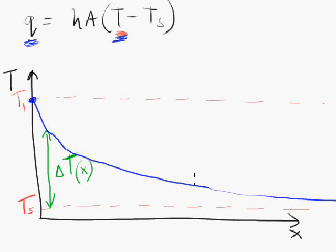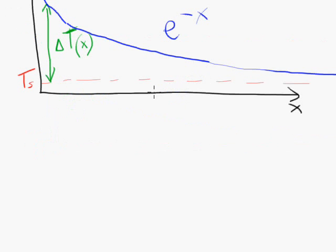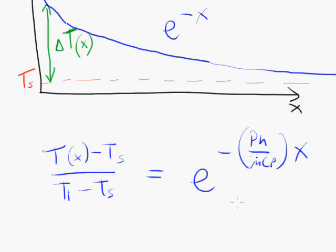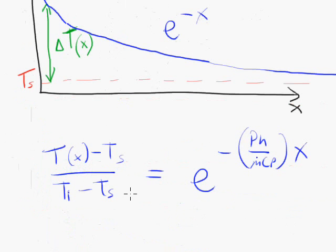Now if you look at the shape of this curve, you can kind of argue on physical grounds that this is what the shape should be. Mathematically, if you look at that curve, it looks like e to the minus X. And it turns out that we can prove that it is an e to the minus X type curve. And the full detail of that is the temperature of the fluid minus T S divided by the inlet temperature, T i minus T S, is equal to e to the minus p H over M dot C P times X. M dot is the mass flow rate of the fluid. C P is the specific heat of the fluid. P is the perimeter of the pipe cross-section. So for a circular pipe, P is the circumference of the circle. T i is the inlet temperature. T S is the pipe surface temperature.